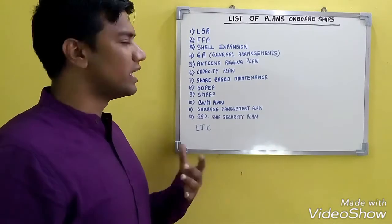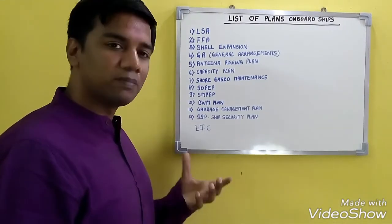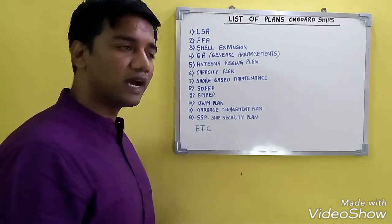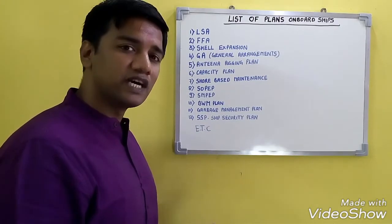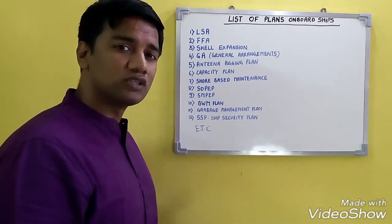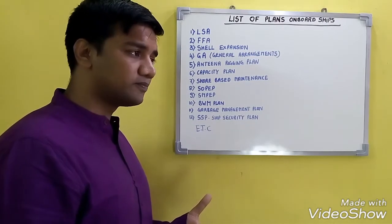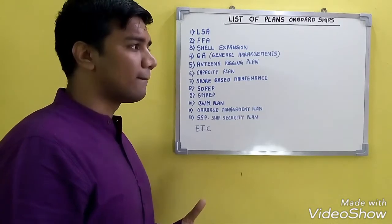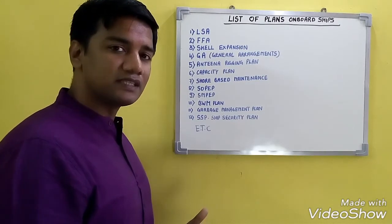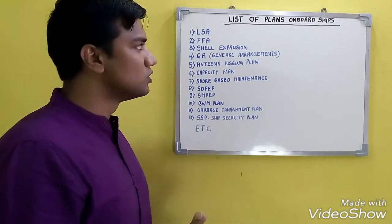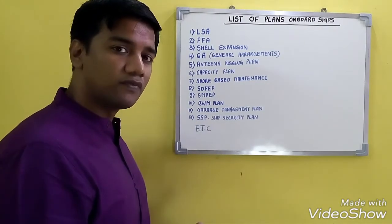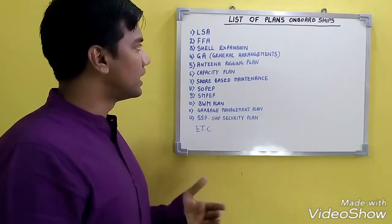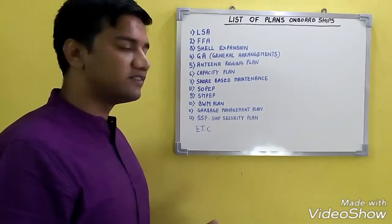The life-saving appliance plan presents the number of life-saving appliances on board and their location. Examples include life jackets, life rafts, life boats, rescue boats, EBDs, and immersion suits. The plan shows where they are located, the number of those items, and their specific location on board.